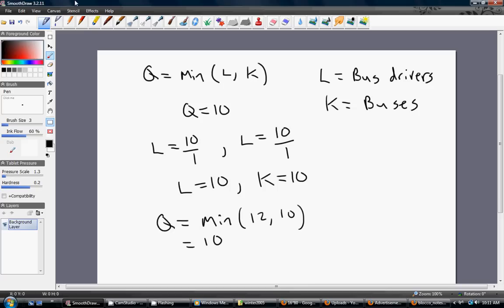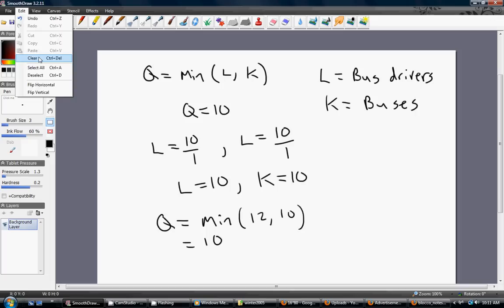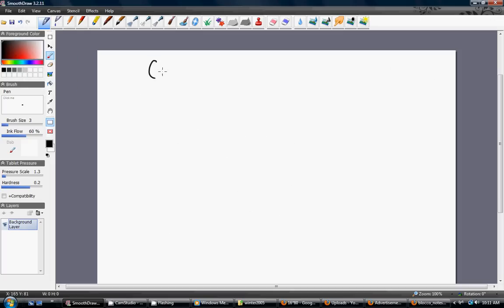Okay, let's do one more example. This time, the perfect complements production function will be given by the minimum of 4 times L and K. And maybe we have some information here that the wage that the firm pays is $100 per worker, W is the wage. R is the price of capital, and maybe that's $80 per unit of capital.